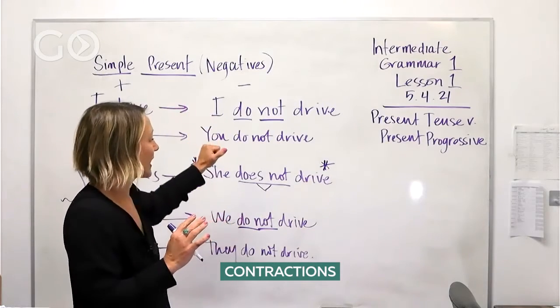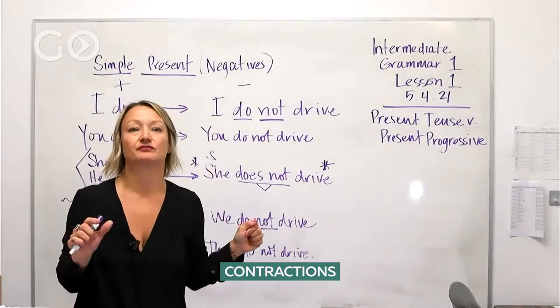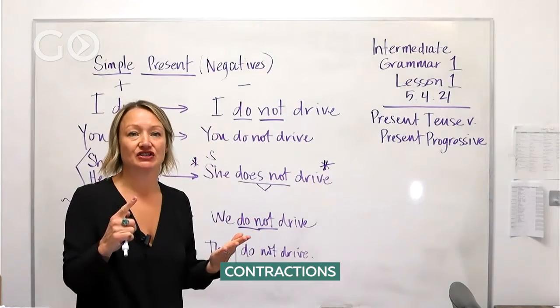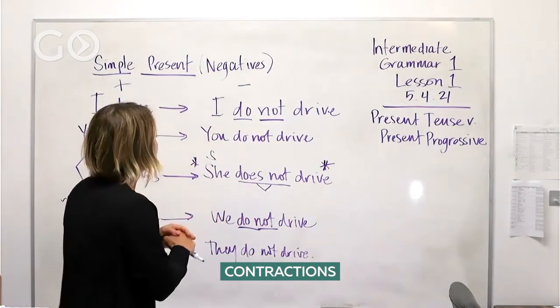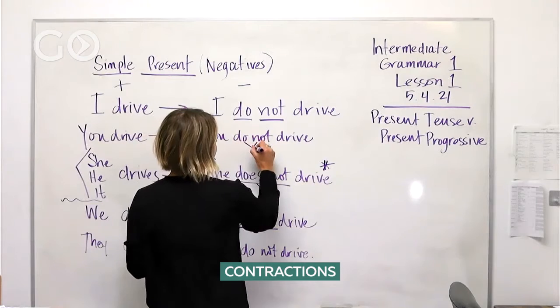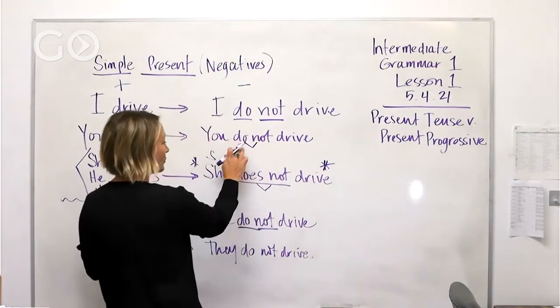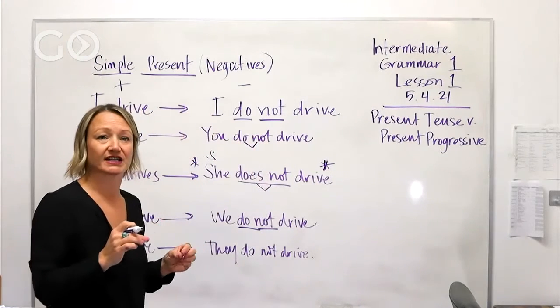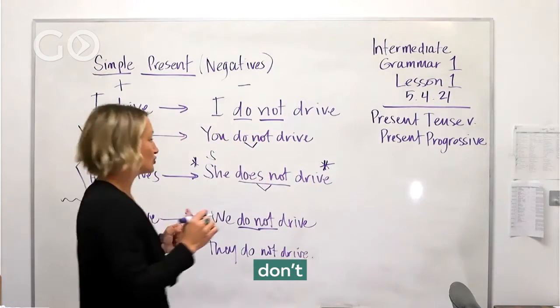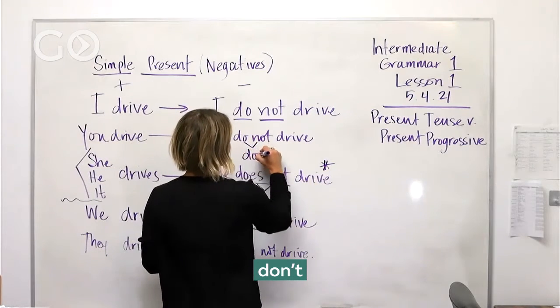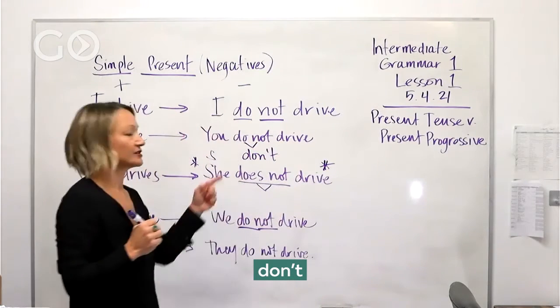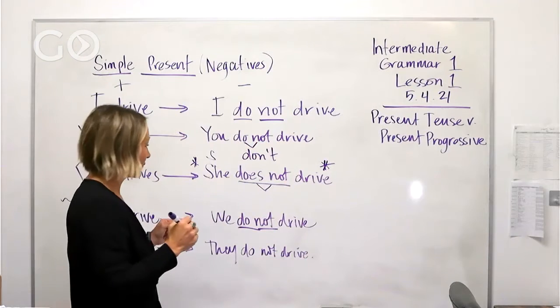Let's now look at the contractions and the pronunciation of those contractions. So 'do not' goes to - we're going to combine these - the vowel sound changes and we say 'don't.' You don't drive. You don't drive. She doesn't.